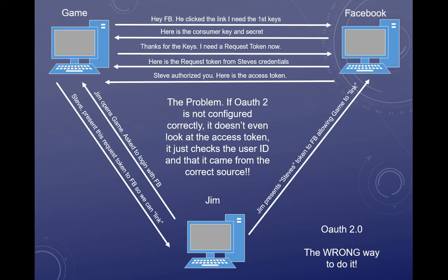This is the problem: if OAuth 2 is not configured correctly, it doesn't even look at the access token. That access token is actually linked to the username and password put in at the beginning — it's built from those credentials, even though it doesn't contain them. But if OAuth 2 is not configured correctly, it doesn't check the access token at all. It only looks for two things: is the person a user — which it checks only by username — and does the response come from Facebook? If those two things are true, Jim gets into the game with that person's username, and he never needed Steve's password.